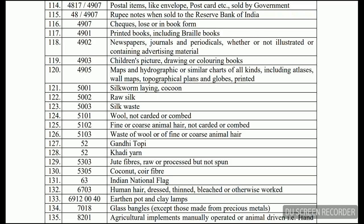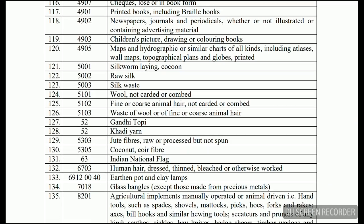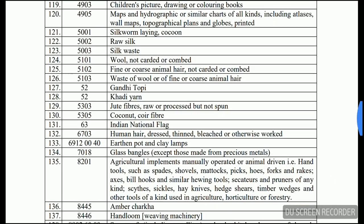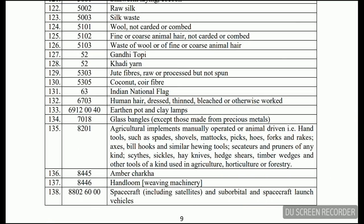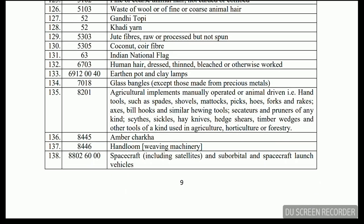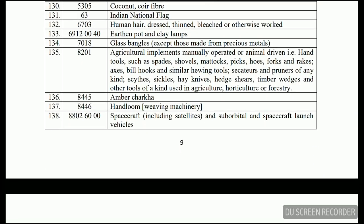Printed books, newspapers, journals and periodicals whether or not illustrated, children's picture drawing and coloring books, maps and hydrographic or similar charts of all kinds, silkworm laying, cocoon, raw silk, silk waste, wool — fine and coarse animal hair, waste of wool, Gandhi topi, khadi yarn, jute fibers, coconut, and the Indian national flag are all exempt.